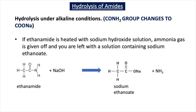Hydrolysis can also occur in alkaline conditions. Heating an amide with aqueous sodium hydroxide gives a salt of the carboxylic acid — a sodium salt in this case — and ammonia gas. The amide group converts to COONa. So ethanamide heated with aqueous NaOH gives sodium ethanoate and ammonia. Similarly, hydrolyzing an ester or nitrile in alkaline conditions gives a salt of the carboxylic acid — using NaOH gives the sodium salt.